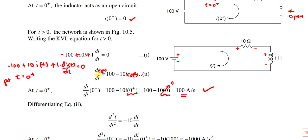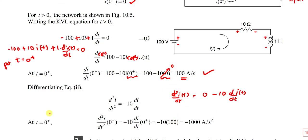Differentiating once again: d²i/dt² at t = 0⁺ equals −10 times di/dt at 0⁺. The value of di/dt at 0⁺ is 100, so d²i/dt² = −10 × 100 = −1000 amperes per second squared. This is why accuracy in the first step is critical — any mistake in i(0⁺) or di/dt|₀₊ will propagate to all subsequent calculations.